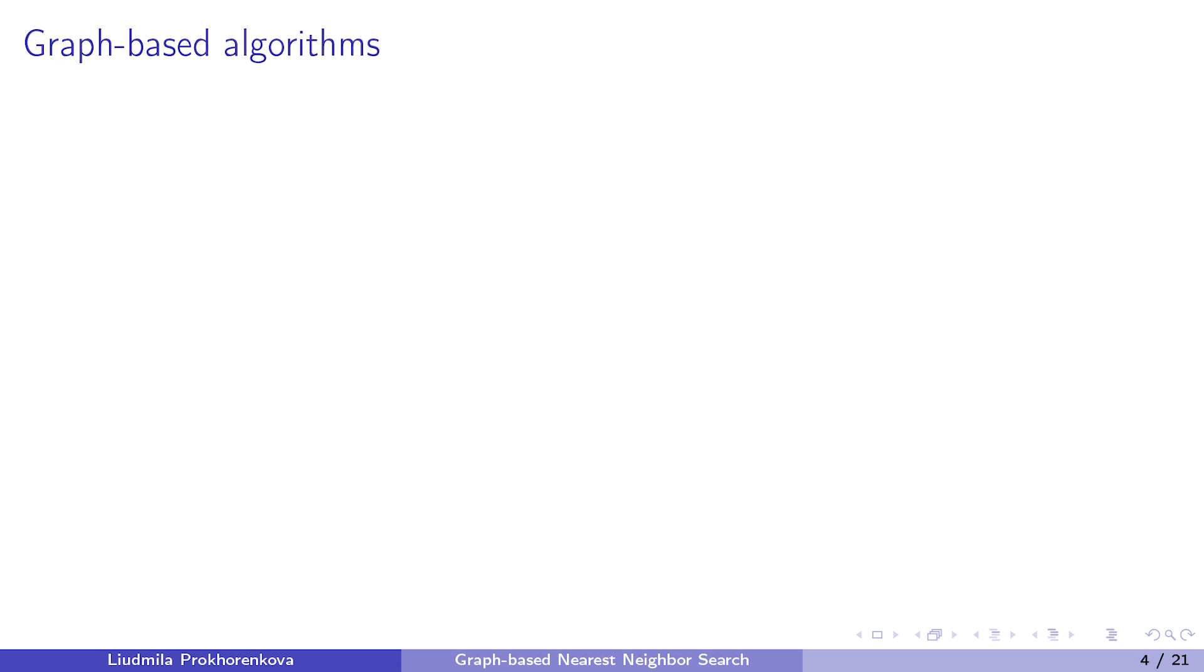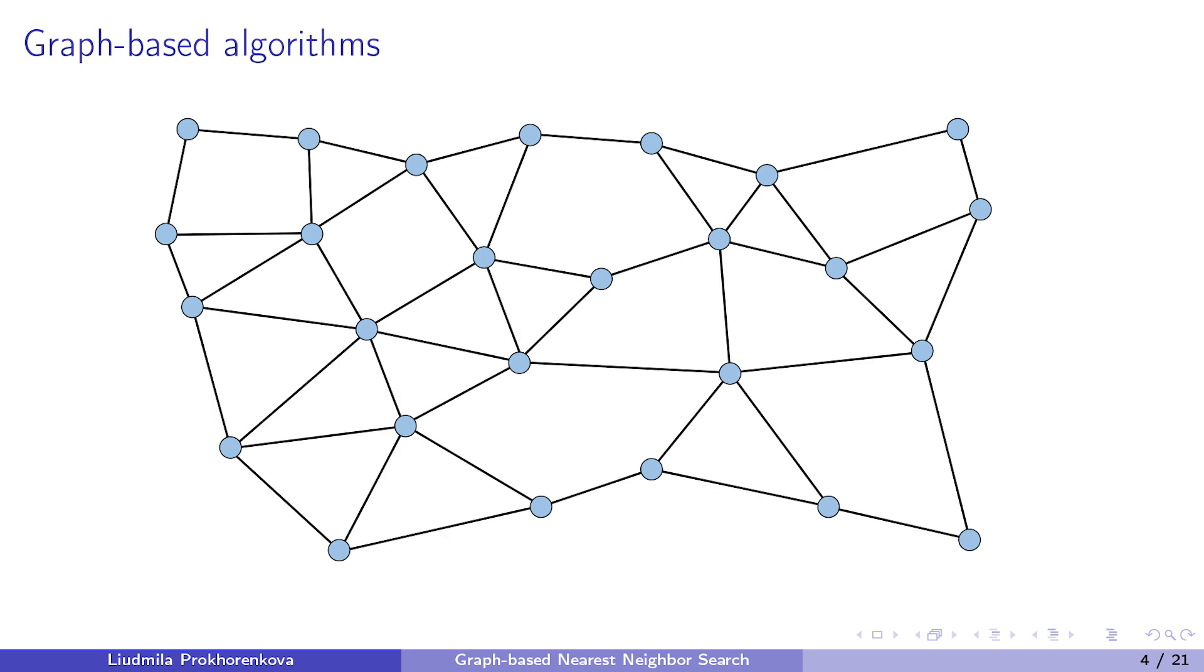Let me describe the main idea of graph-based nearest neighbor search. Recall that we have a database of elements. On these elements, we construct a proximity graph where each node is connected to its nearest neighbors. Then, for a given query q, we start at some element of the dataset and make greedy steps towards the query on the graph.